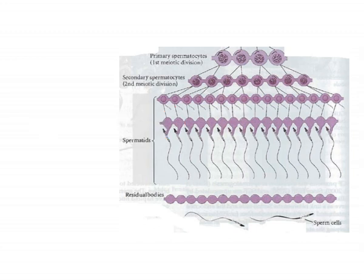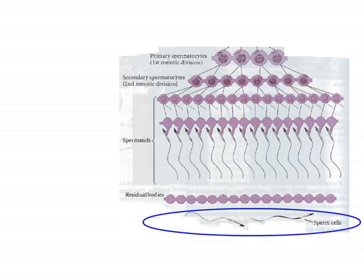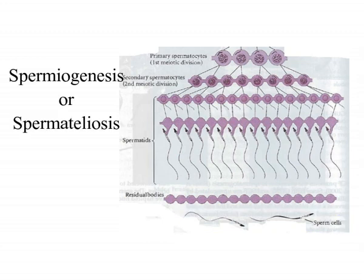Mammalian spermatids are round and unflagellated. The spermatids are differentiated into elongated, flagellated, motile sperms through a process called spermiogenesis or spermateleosis.